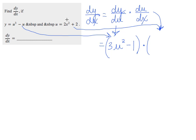So the derivative of 2x squared would be 4x to the first, and the derivative of 2 is 0.